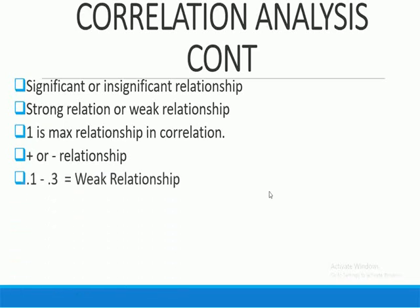A weak correlation is when your correlation falls between 0.1 and 0.3 — it is considered a weak relationship. If the correlation of variables A and B falls in this range, then variables A and B have a weak relationship.